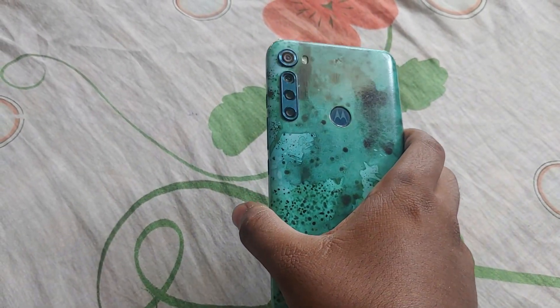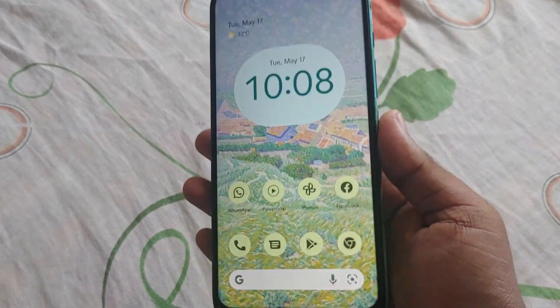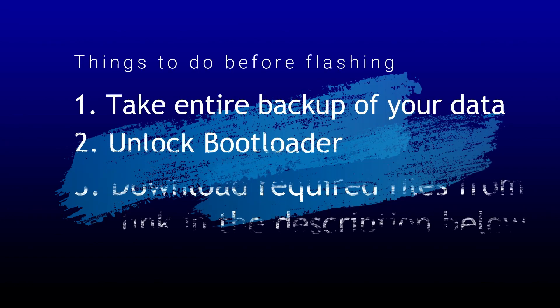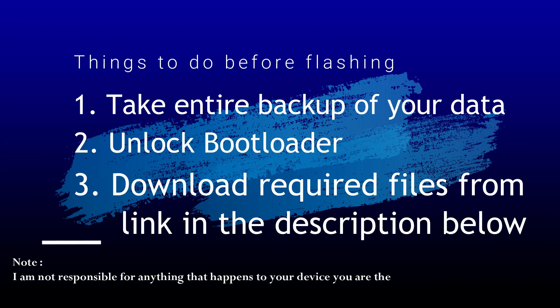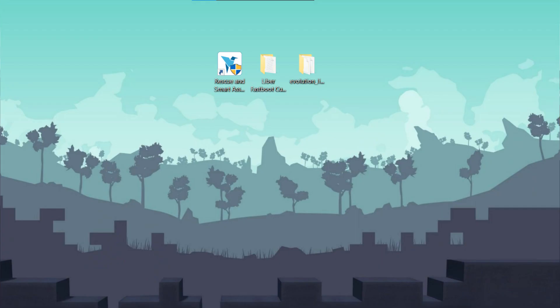The ROM is pretty stable except for two or three features not working. Dual VoLTE is also not working, but aside from that this ROM is pretty stable like the others. Some things you must do before flashing: take a full backup of your data, unlock your bootloader (watch my previous video on how to), and download the required files from the link in the description. Flash this ROM at your own risk — I am not responsible for anything that happens to your device.